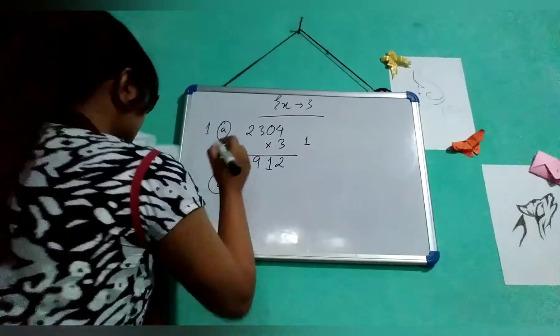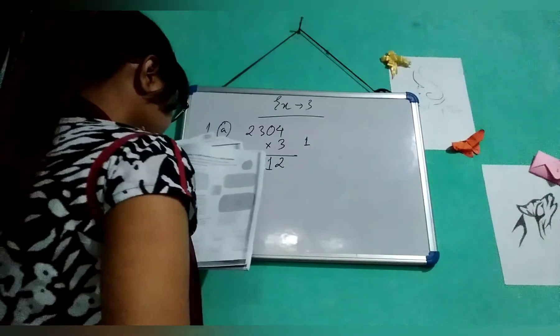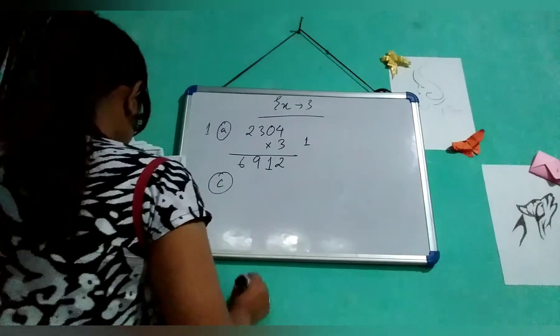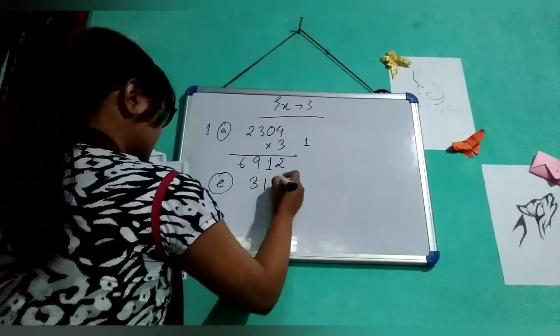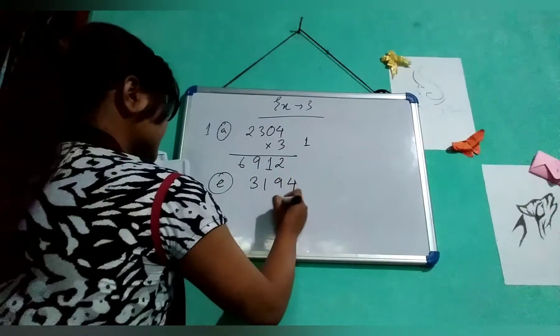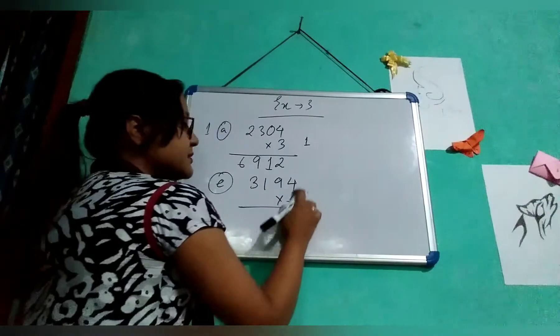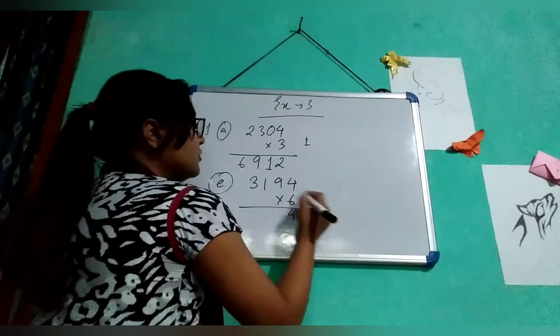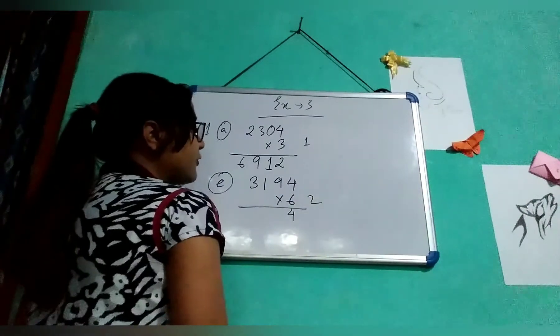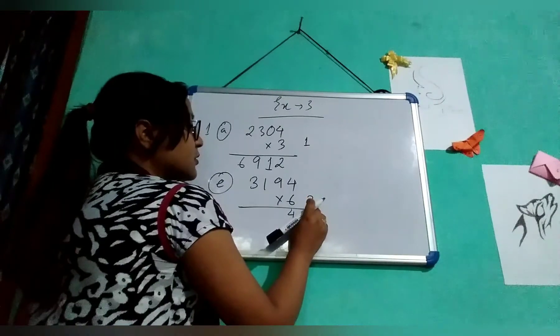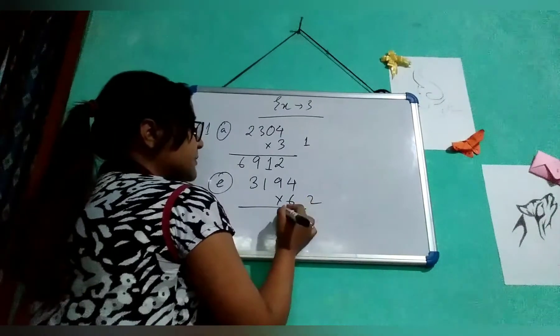Let me do one more, number E. 3194 into 6 they have given. 4 times 6 is 24, write 4 and carry 2. 9 times 6 is 54, 54 plus 2 is 56, write 6 and carry 5.